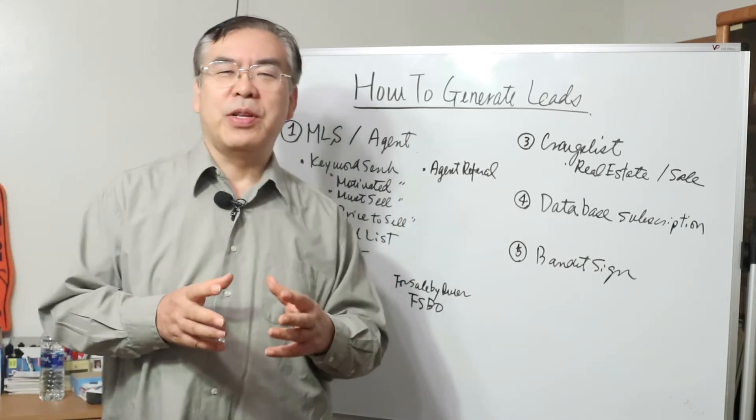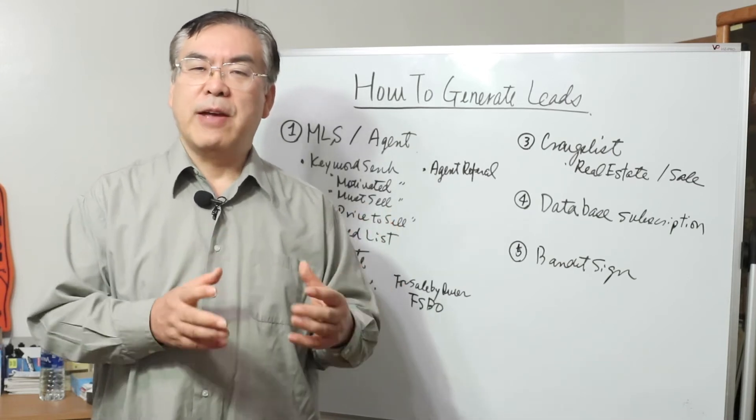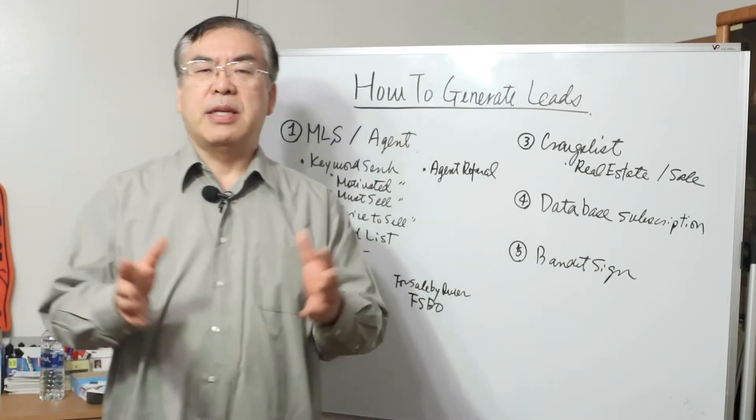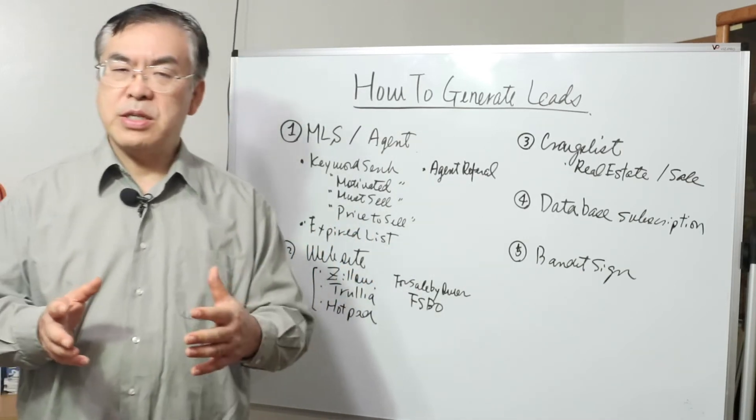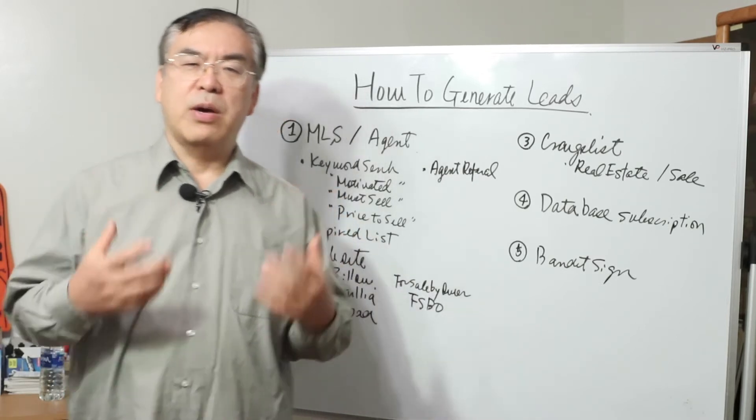You're going to talk with the agent and then you can find out if seller is so motivated or not. Also, if you work with the investor friendly agent, you can ask them to find out expired list. People put on the market to sell, but this is not sold for three months or six months and listing is expired.